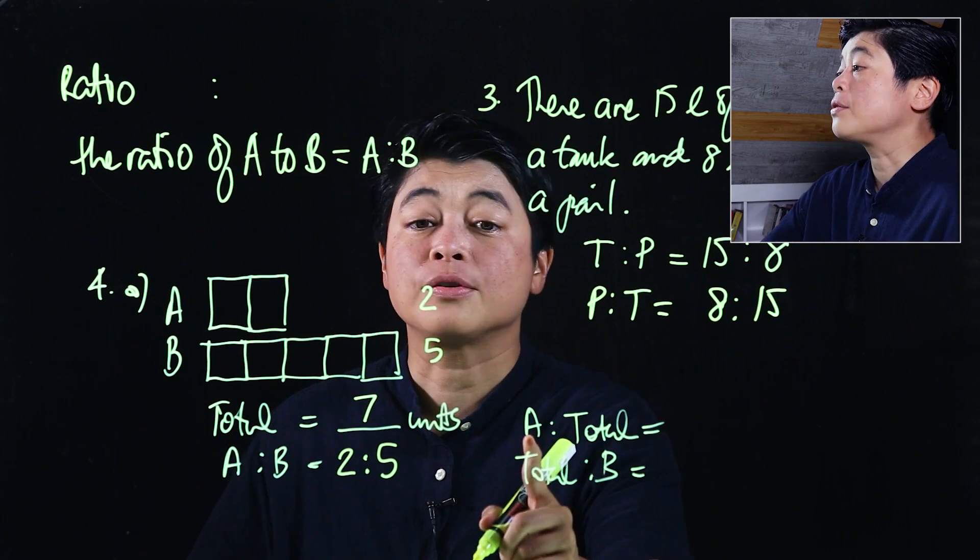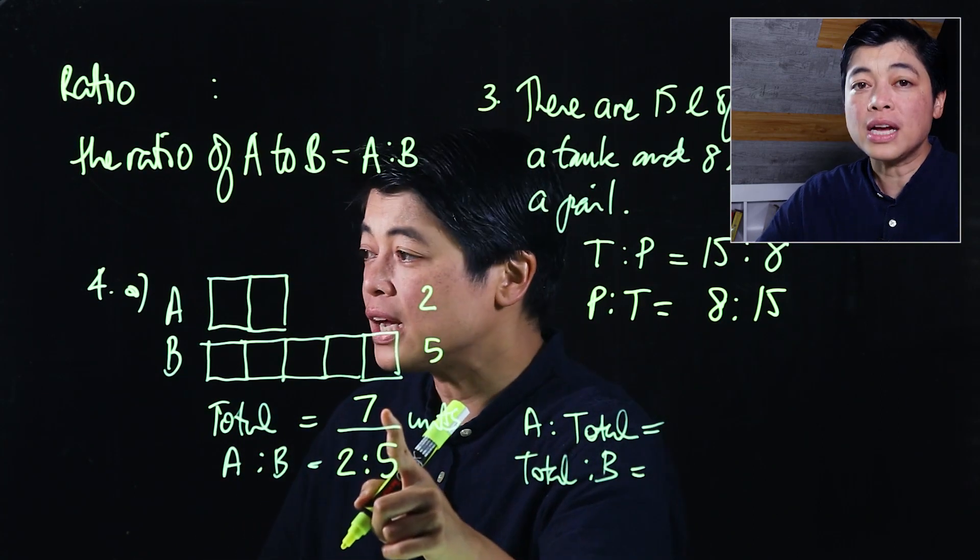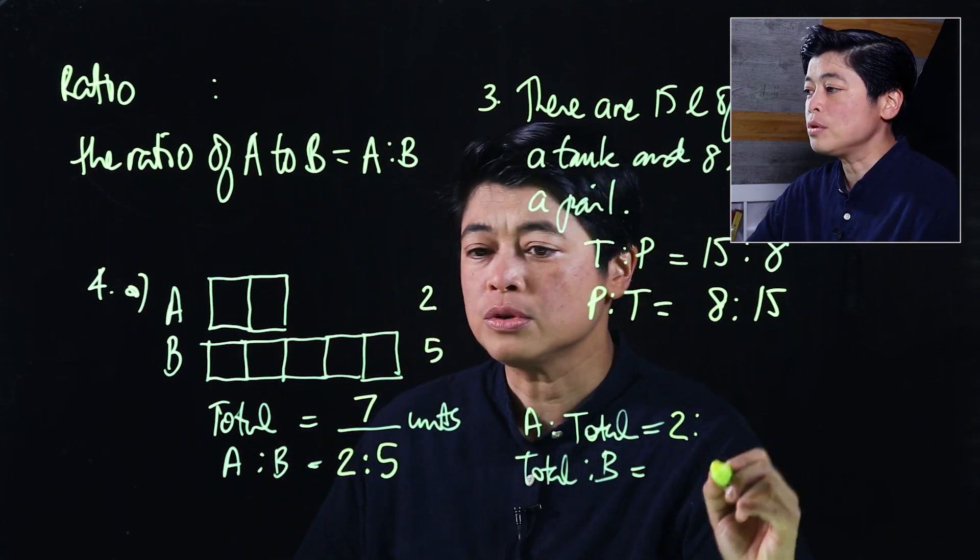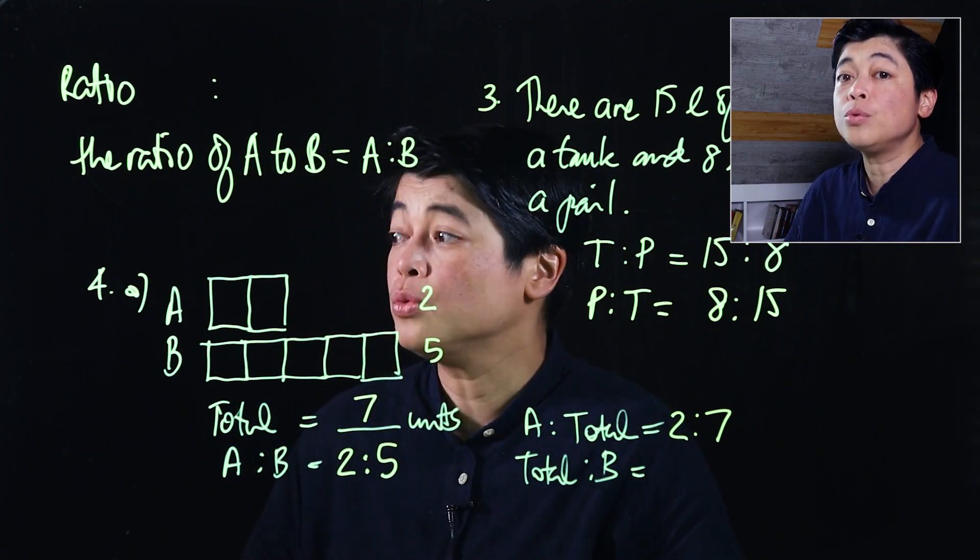Next it asks, what's the ratio of a to the total? Since we know the total is seven units, the ratio of a, which is two, to the total, which is seven, is 2:7.